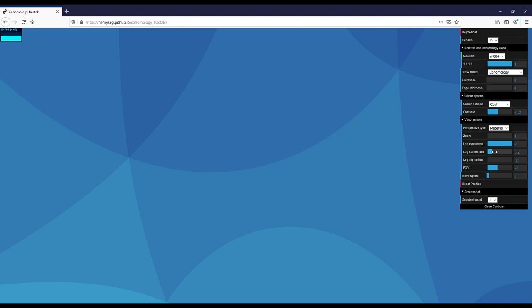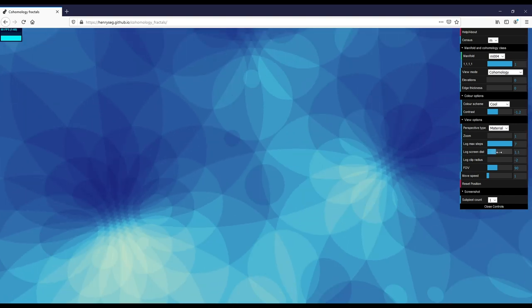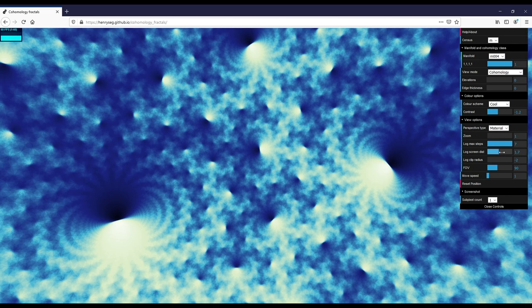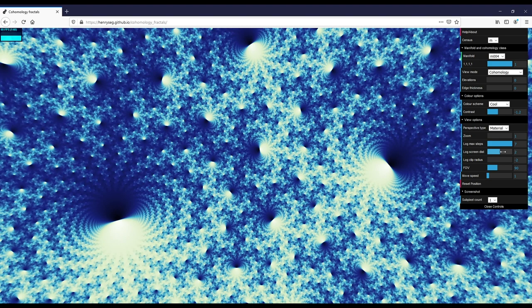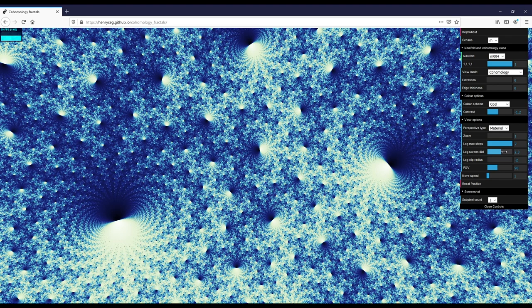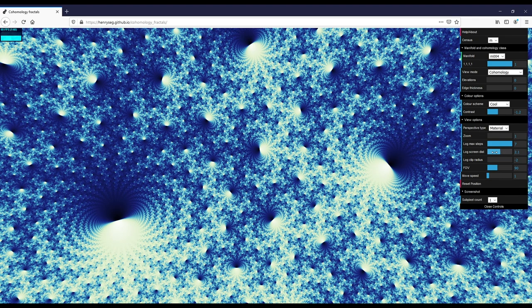And then as I increase the screen distance, you can see that the pattern sort of resolves, gets sort of blurry. And then sort of around here, 2.1, 2.2 or so on this screen, you get this sort of very nice sharp fractal picture.